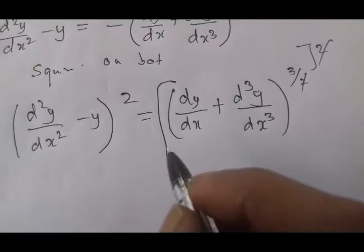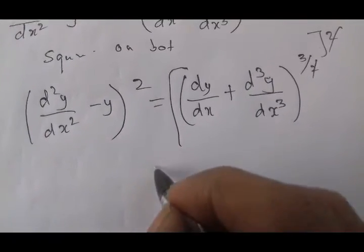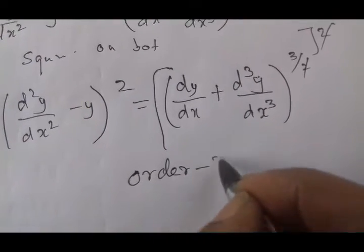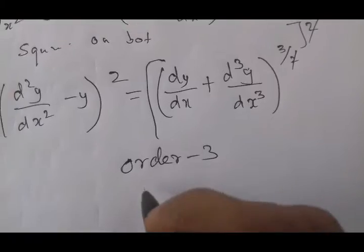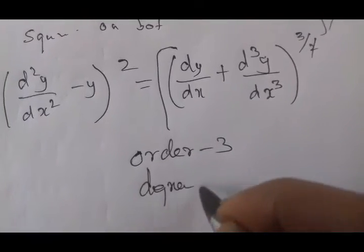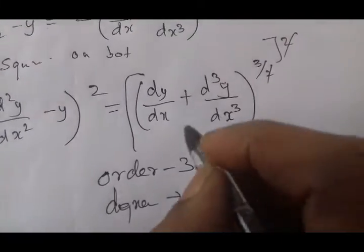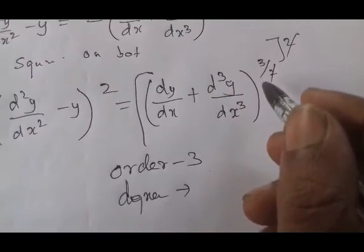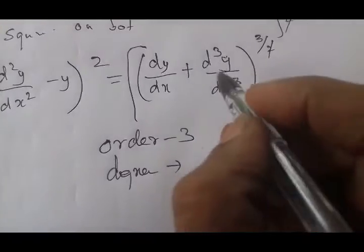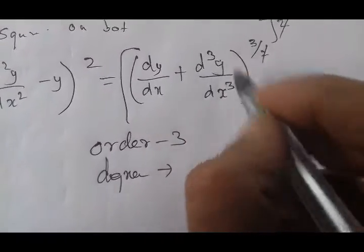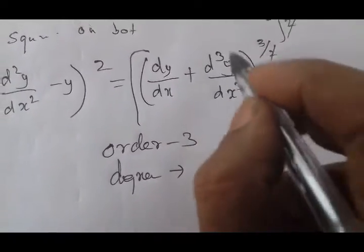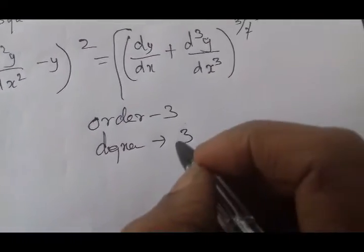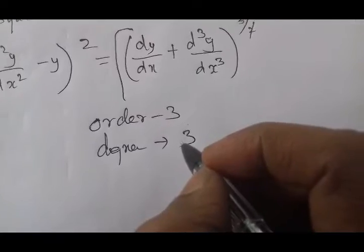So the order is 3 and the degree — using A plus B whole cube — the whole power gives order 3, degree 3. Okay.